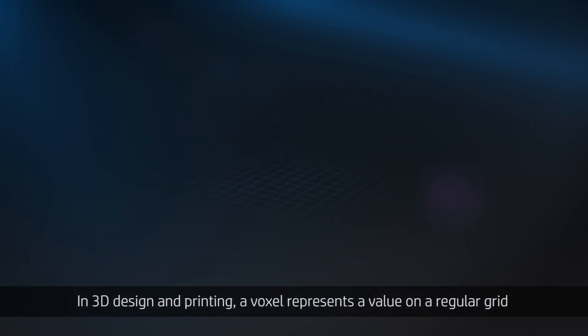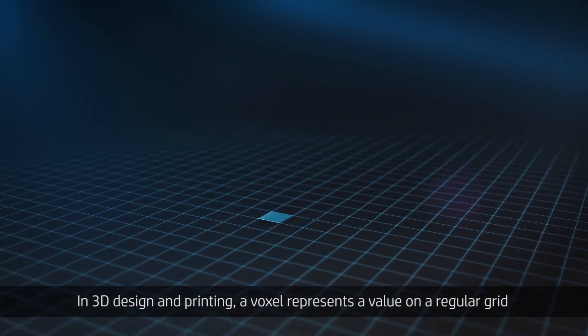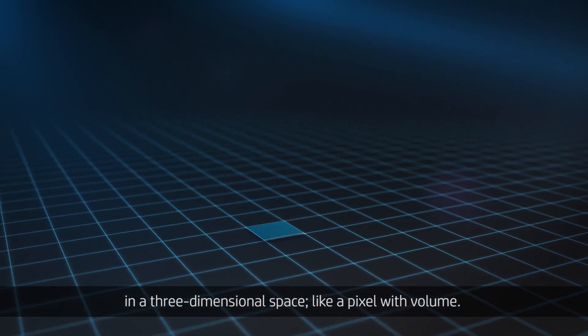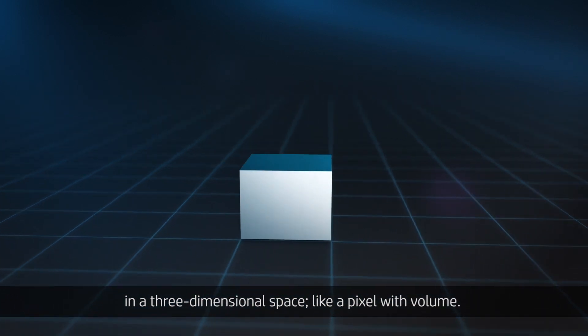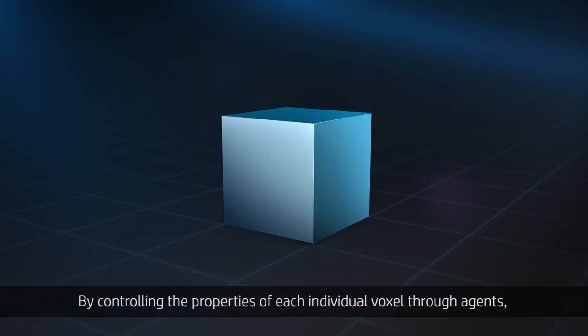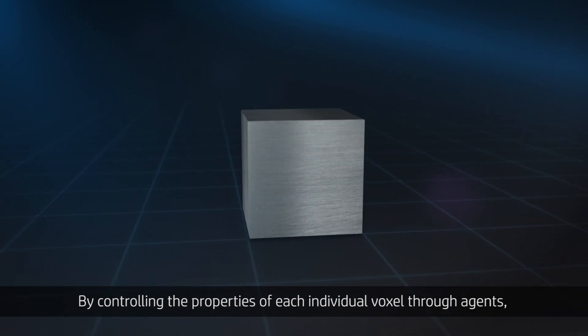In 3D design and printing, a voxel represents a value on a regular grid in a three-dimensional space, like a pixel with volume. By controlling the properties of each individual voxel through agents, HP Multi-Jet Fusion can produce parts that can't be made by other methods.